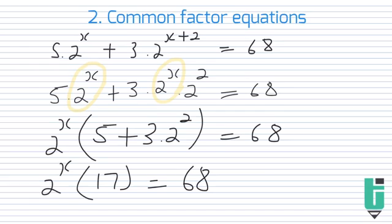And now, it just so happens that 68 is divisible by 17. So what we actually want to do is divide by 17 so that we can get this 2^x alone on the left hand side. So we have 2^x is equal to 68 divided by 17, which will give us 4.